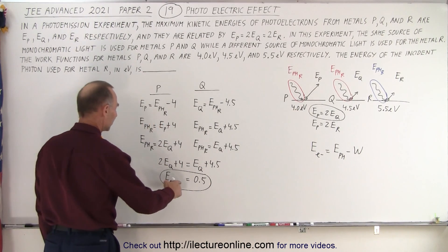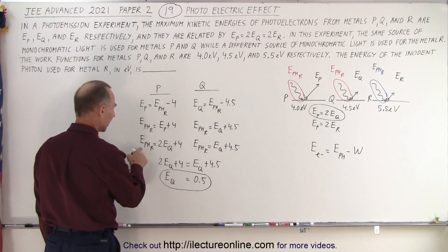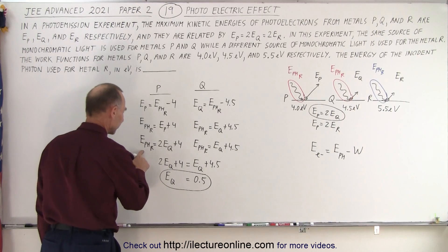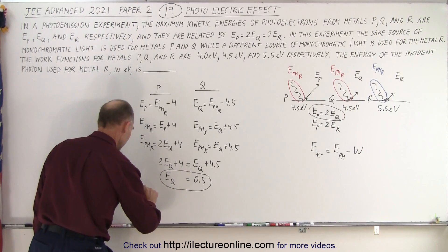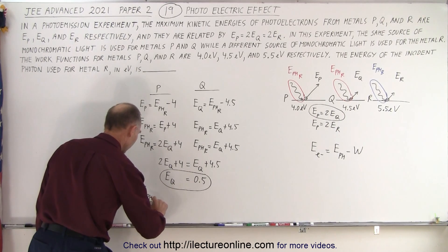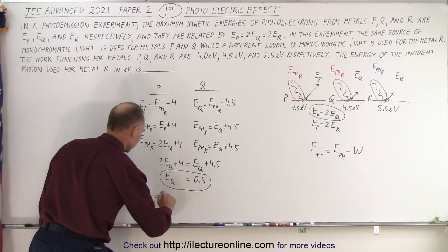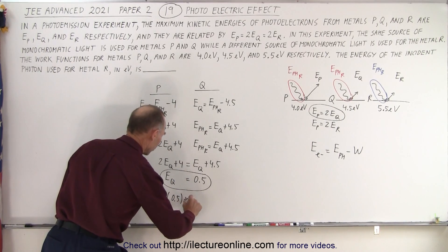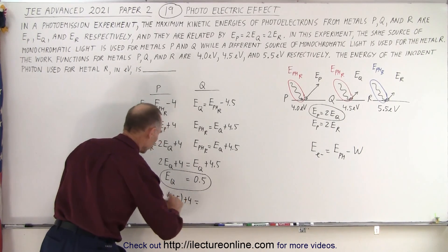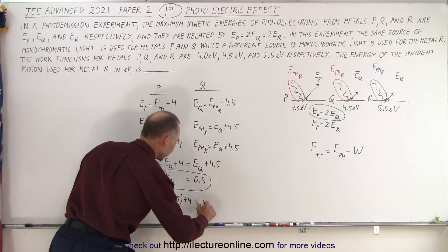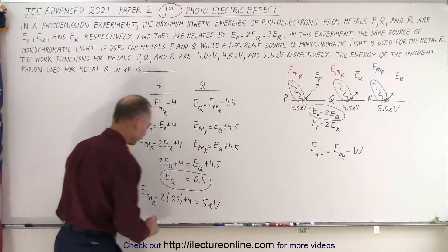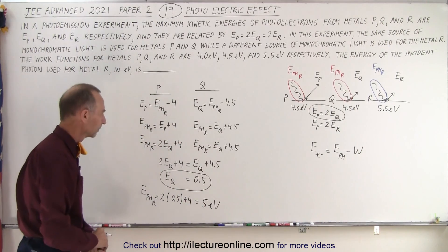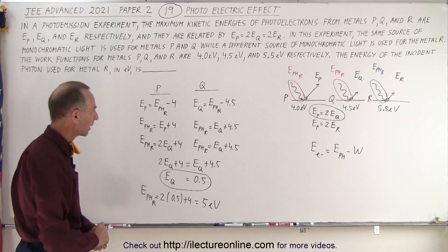Now that we have E_q, we can find E_photon_red = 2·E_q + 4 = 2(0.5) + 4 = 1 + 4 = 5 electron volts.